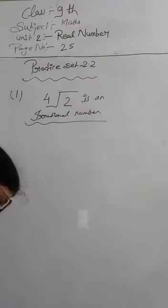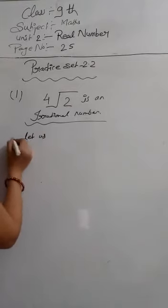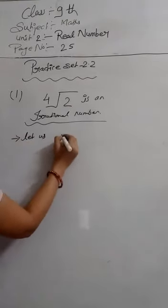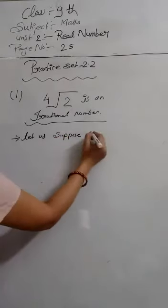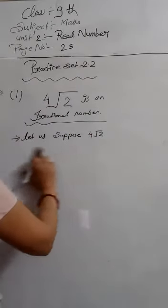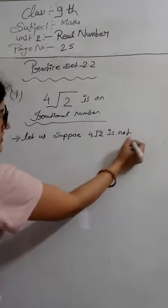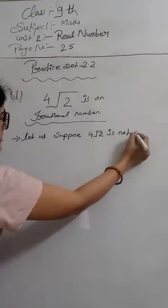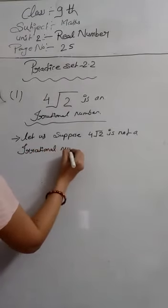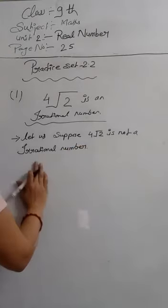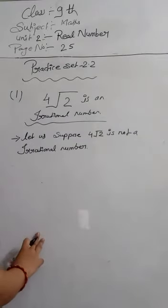First, we will suppose here — let us suppose that 4√2 is not an irrational number. So we suppose 4√2 is a rational number.